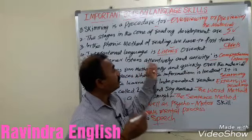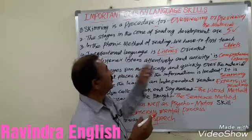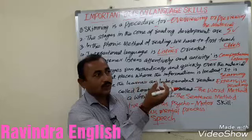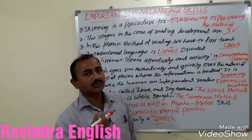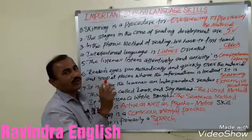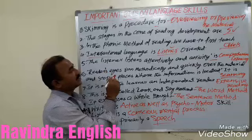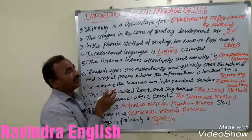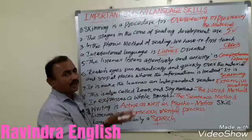Understanding attentively — that is comprehensive listening. That is the holistic method. Parts to parts of holistic method — the listener listens attentively. Comprehensive listening is the same as comprehensive reading — reading with understanding.